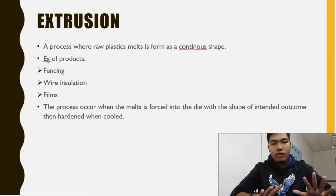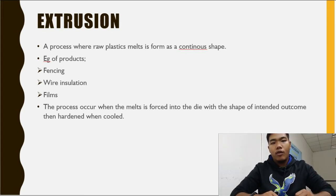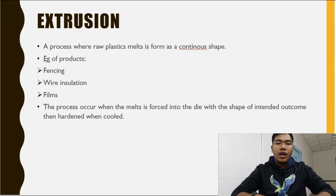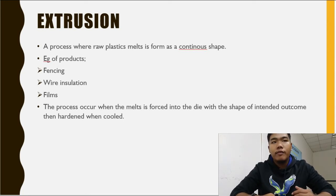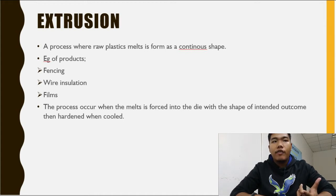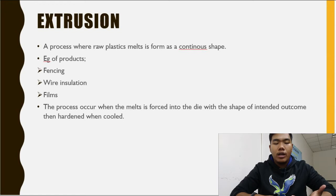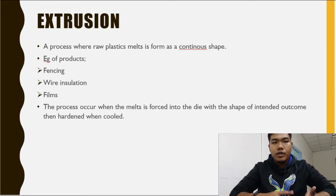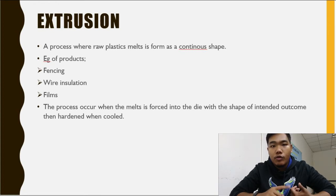In plastics there are 10 methods of shaping processes. The first method is extrusion. Extrusion is a high-volume manufacturing process where raw plastic is melted and formed into a continuous profile. Examples of extrusion products include pipe, tube, fence, deck railings, windows, frames, and plastic films.